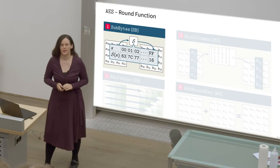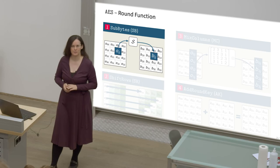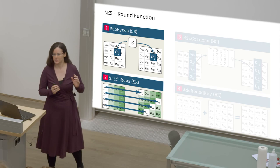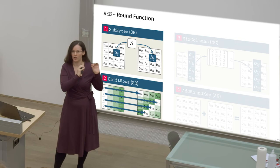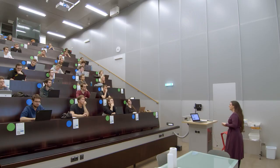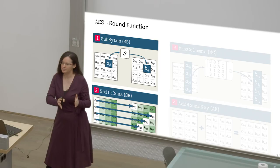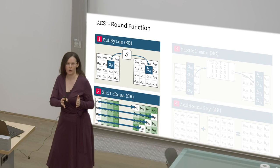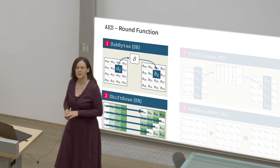After that, we are going to have two functions which are responsible for diffusion. The first one of them is the ShiftRows function. It takes this matrix — every row of this matrix — and shifts it by a particular offset. In the end, bytes that were in the same column before will be in different columns afterwards. That's because of the next operation, the so-called MixColumns operation.